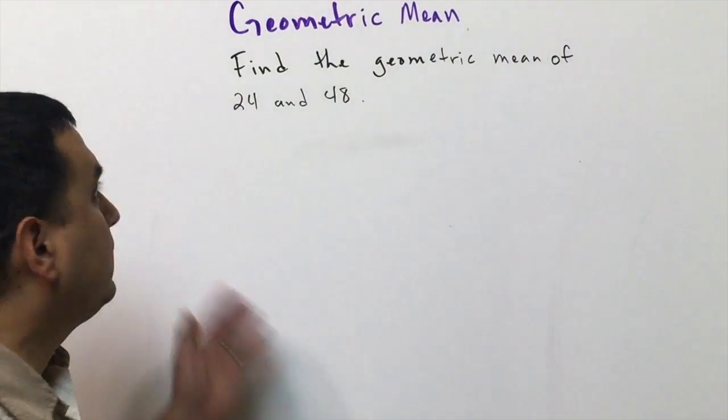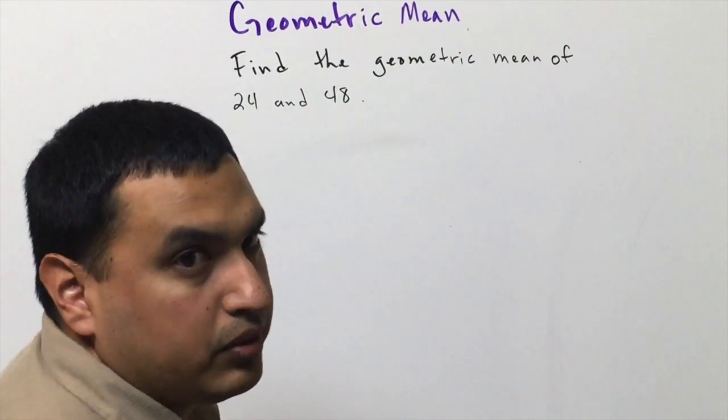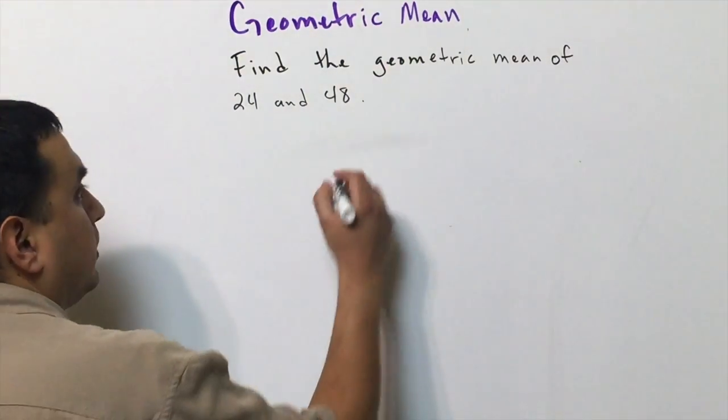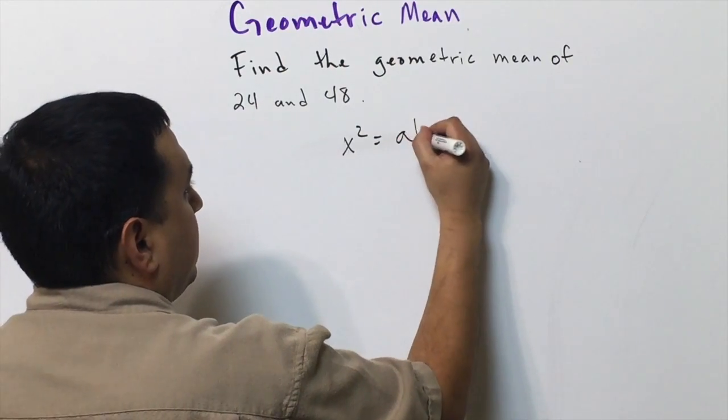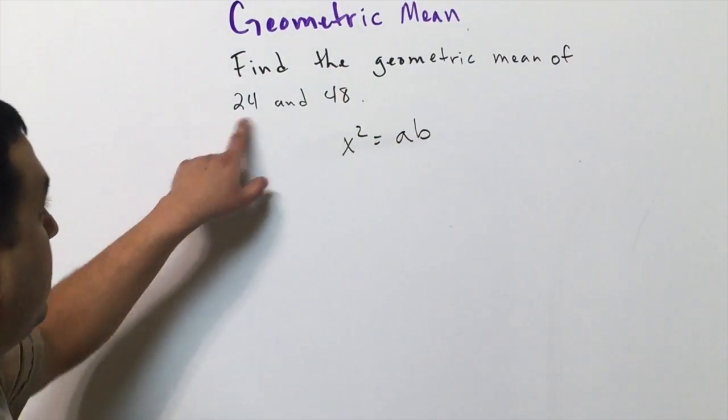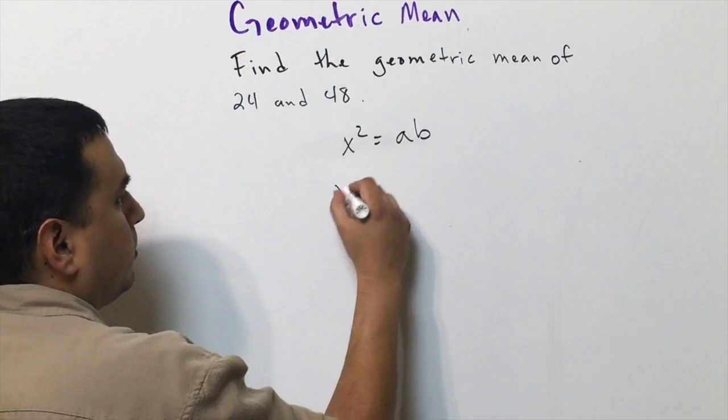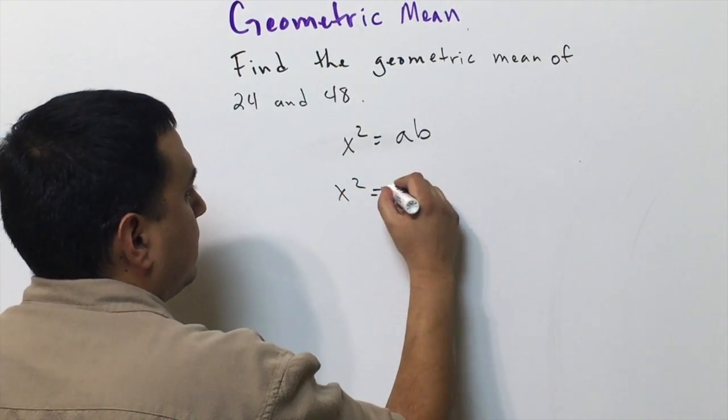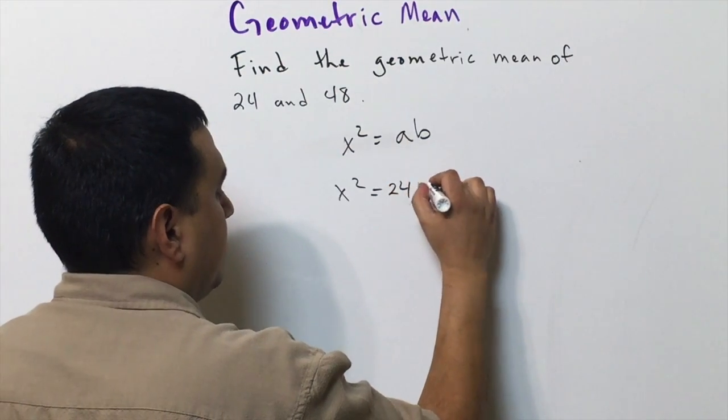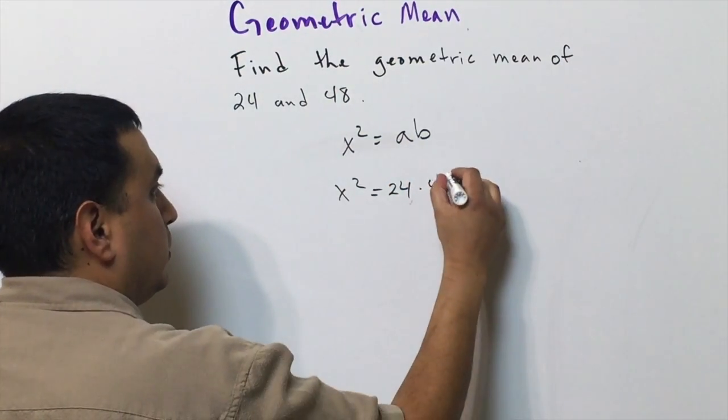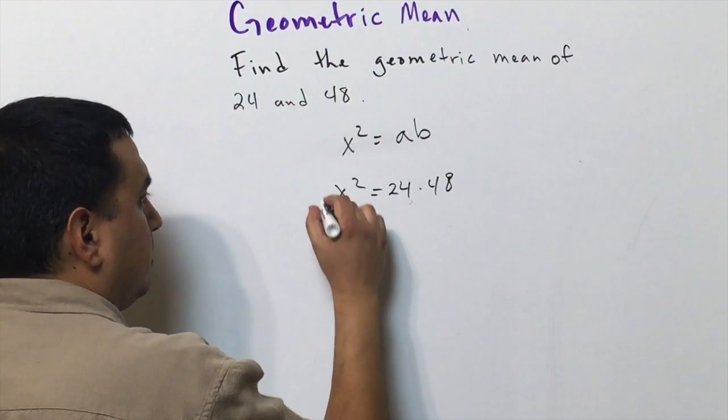The geometric mean of 24 and 48 is what we're looking for. I know that x squared equals a times b, so here's my a and b. I know x squared equals 24 times 48.